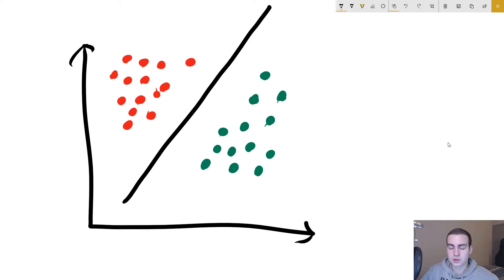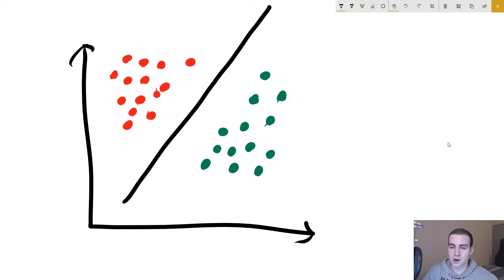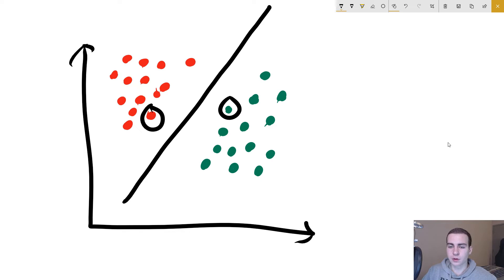The requirements for a hyperplane are that it is the same distance from the two closest points of each opposite class. So the closest point to the line from the red side is this red point, and the closest point from the green side is this green point. These are the two closest points to the line from either class, and the distance between this red point and the line, and this green point and the line, are the exact same.